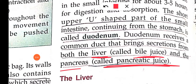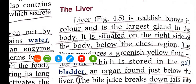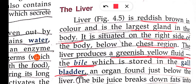In the duodenum, it receives chyme from the stomach, bile juices from the liver, and pancreatic juices from the pancreas. The liver is a reddish-brown organ and is the largest gland in the body, located on the right side of the chest cavity.